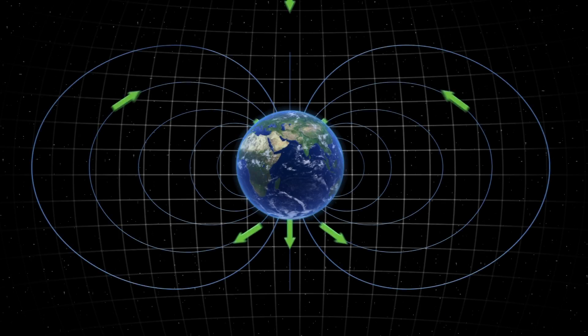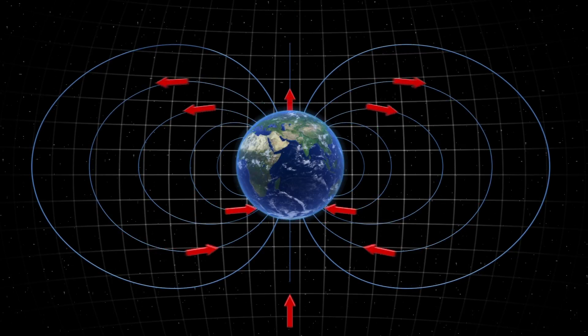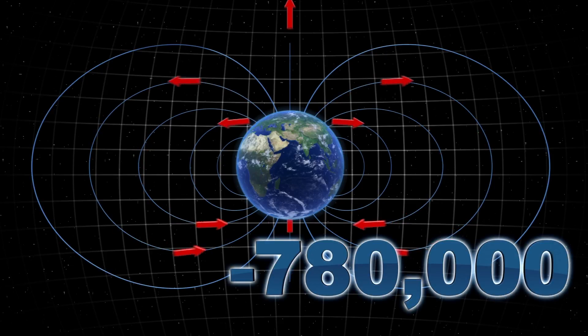The field can switch directions, a phenomenon known as geomagnetic reversal, believed to unfold slowly over thousands of years, with the last full reversal occurring 780,000 years ago.